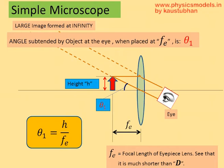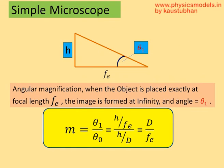And therefore, the image is also formed at the same angle. So, the angle subtended by the image is equal to angle subtended by the object and that's theta 1. And theta 1 is now equal to h by fe if you look at the triangle, h being the opposite side and fe being the adjacent side for that angle.